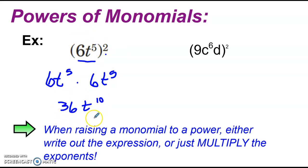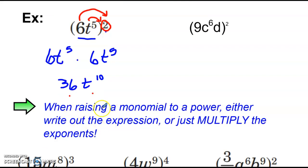But you may notice here, if you look at where we started and what our final answer is, there is a shortcut to this. Whenever you have an exponent outside the parentheses, you can take everything that's inside the parentheses and raise it to that power. For example, I can take the constant 6 and raise it to the 2nd power, that gives me 36. I can take t to the 5th and then I multiply the exponents, 5 times 2 gives us t to the 10th. So like it says right here, when raising a monomial to a power, either write out the expression like I did right here, or just multiply the exponents like we did right here.